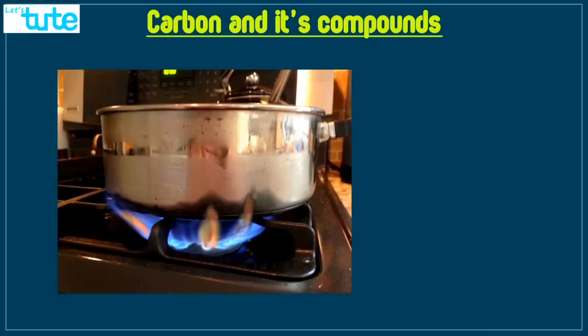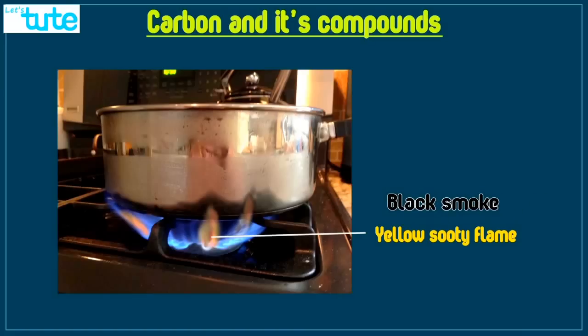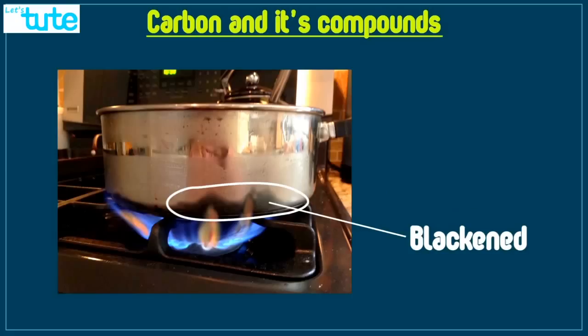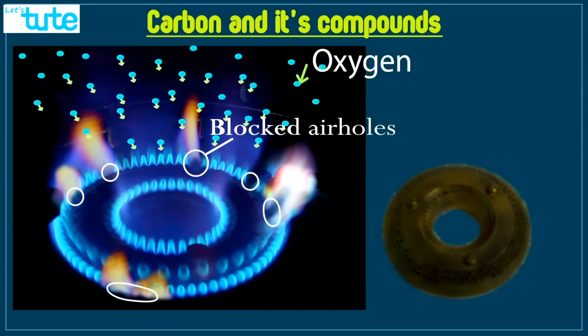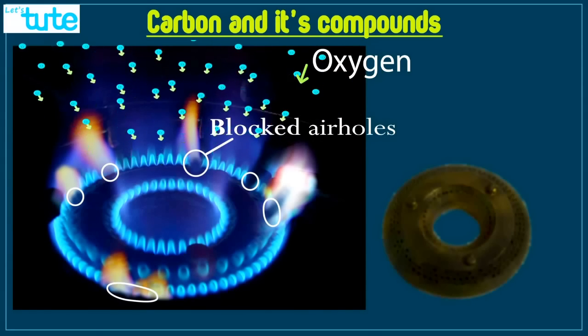Let us take one more example. Sometimes the flame of our gas at home burns with yellow flames and it also gives us black smoke. Due to this, the vessels or the pans that are placed on the burners, the lower portion of these utensils gets blackened. That is because this generally happens when the holes of the domestic gas burners are clogged.